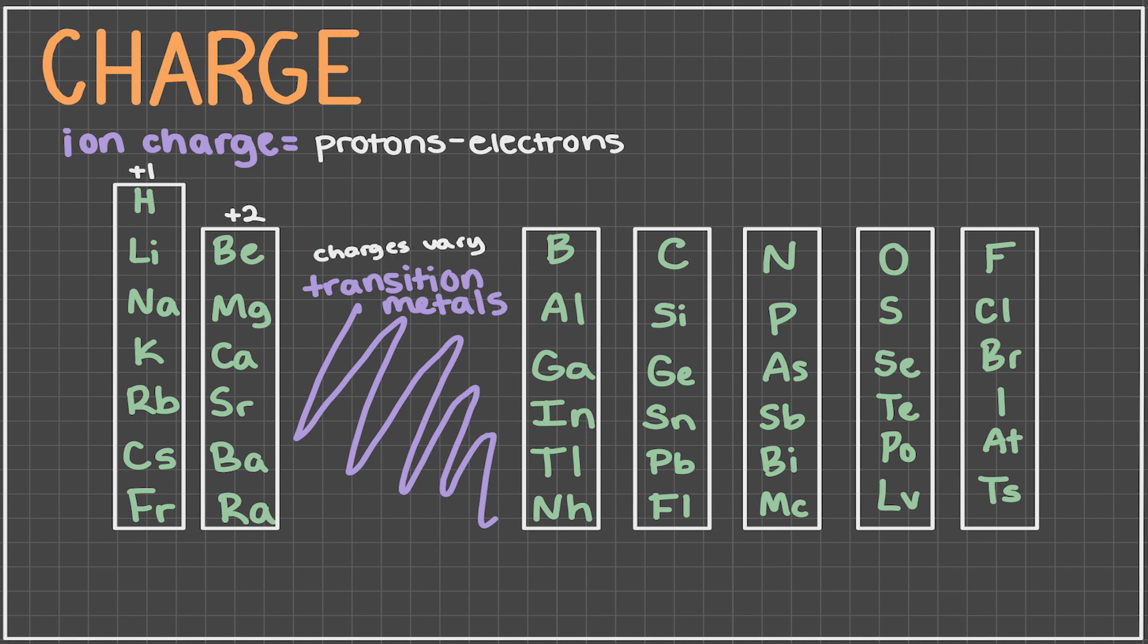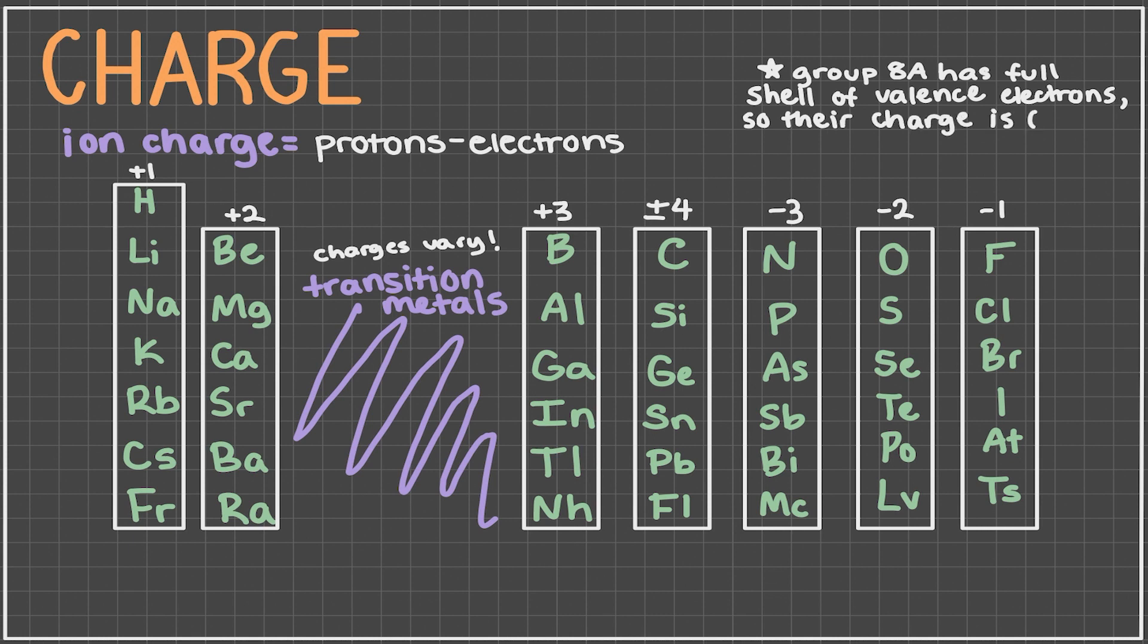Group 1, or column 1 elements, have a charge of plus 1. Group 2 has charges of plus 2. Then, skip the transition metals in between. Those charges will vary. The group after that has elements with charges of plus 3. The next group has elements of charges plus or minus 4. It really depends on the situation. The next group has a minus 3 charge, the next minus 2 charge, and finally, a 1 minus charge. Since column 8a, the noble gases, all have a full octet of valence electrons, they have no charge.